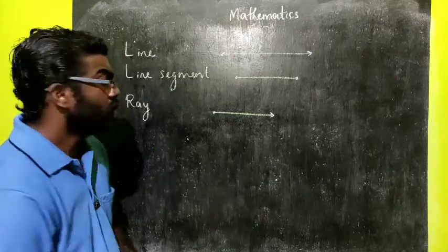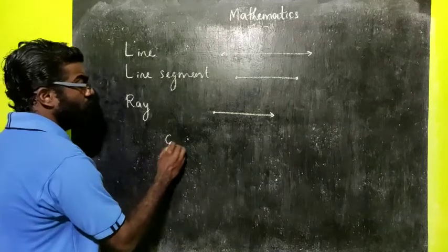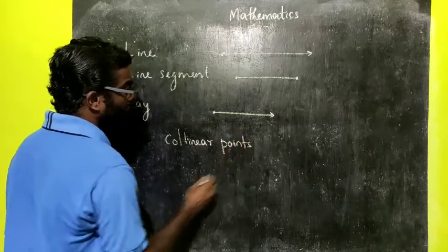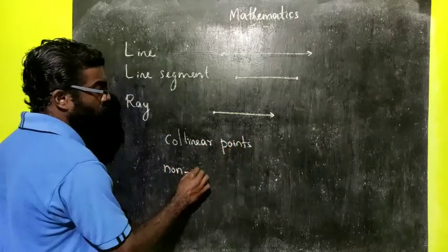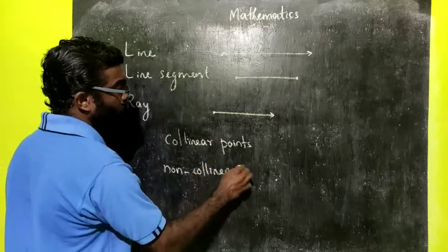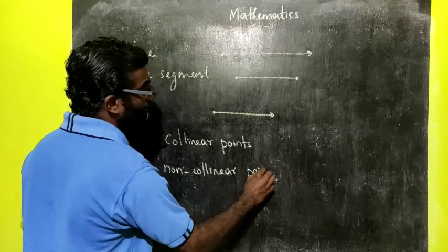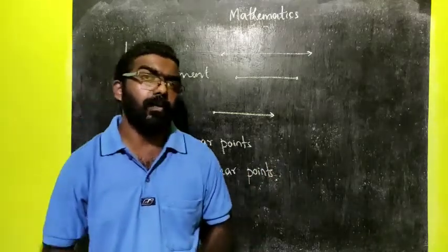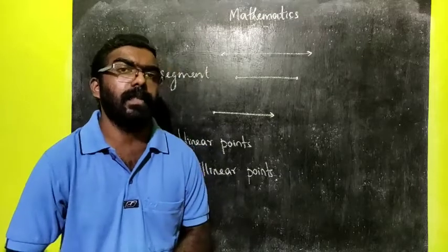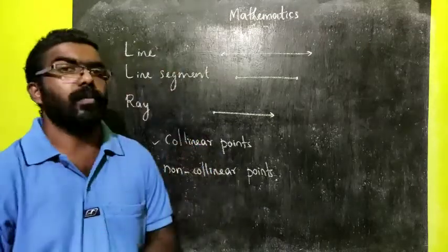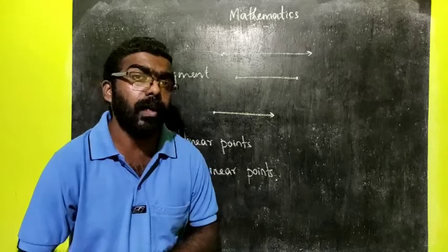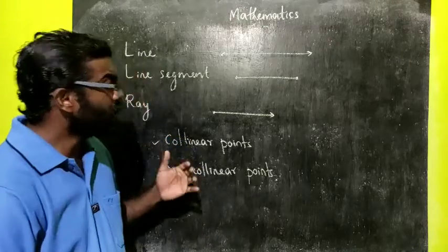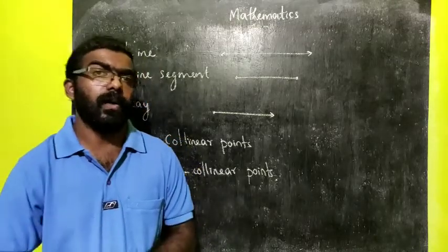Now we shall discuss the terms collinear points and non-collinear points. By collinear points we mean three or more points that lie on the same line are called collinear points. Otherwise they are called non-collinear points.